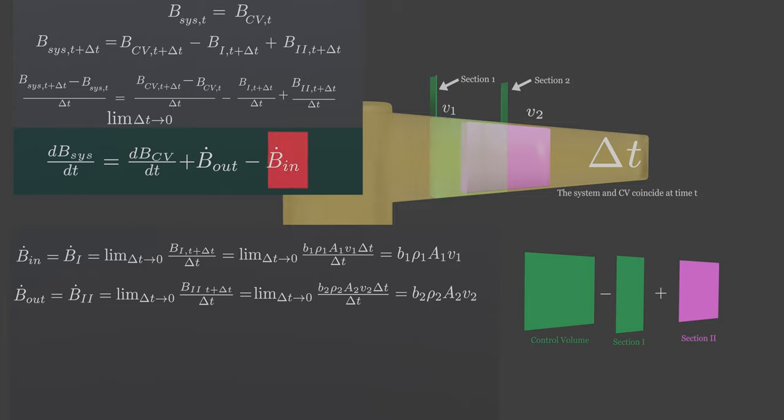The influx is the extensive property, like mass or energy, that enters through section 1 having velocity V1, having control surface area A1. So total mass or other extensive property that enters through this control surface and becomes part of control volume at surface I.